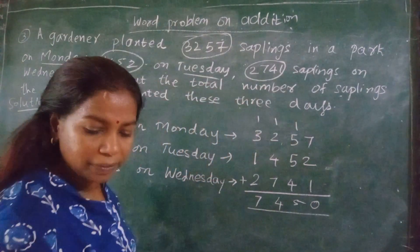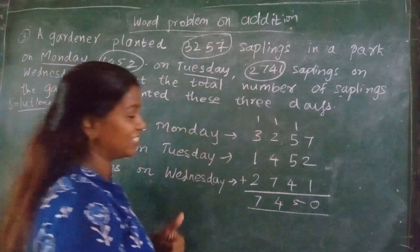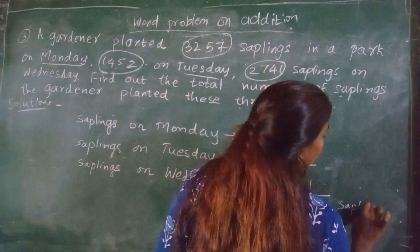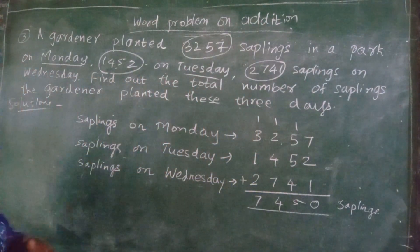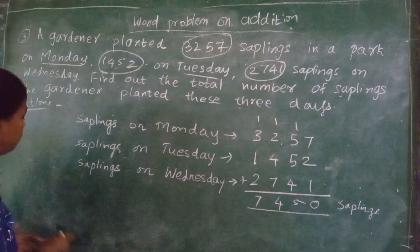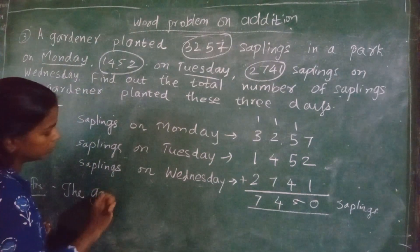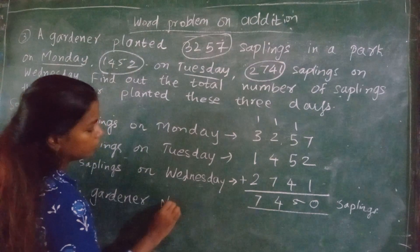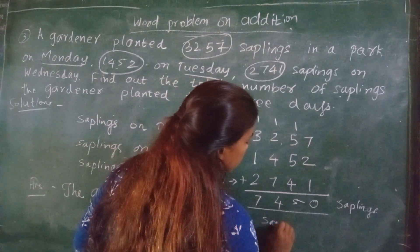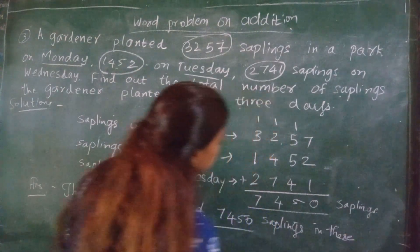I hope you also got the same answer: 7,450. Very good children. Day by day you are becoming smart, I like it. So the final answer — the gardener planted 7,450 saplings in these 3 days.